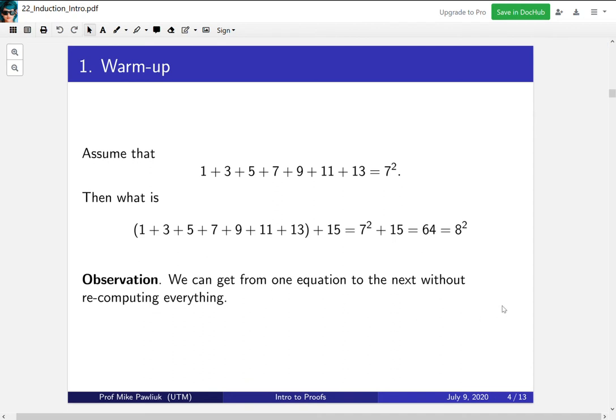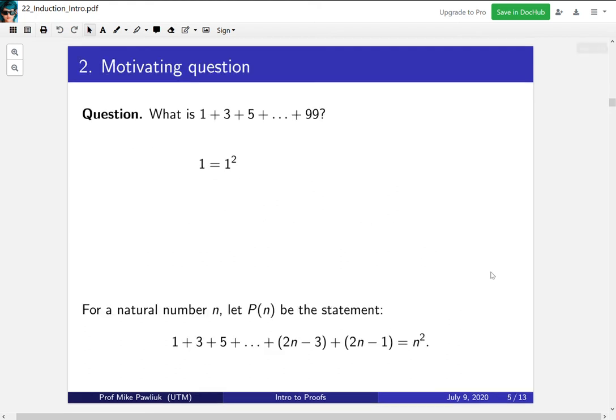So our big observation is that we can get from one equation to the next without re-computing everything. This might not look so impressive now because maybe adding up 8 or 9 numbers is not so hard for you. But if this was the sum of maybe 2,000 numbers you wouldn't want to re-compute them every time. You'd want to use the work you previously did. So let's take a look at the question what is 1 + 3 + 5 all the way up to 99. So the odd numbers from 1 to 99. That's going to be our motivating question and we're going to use this to motivate how induction works and why we care about it.